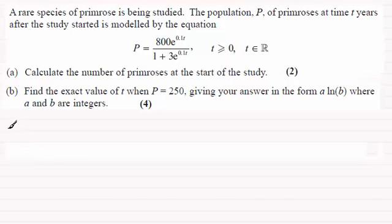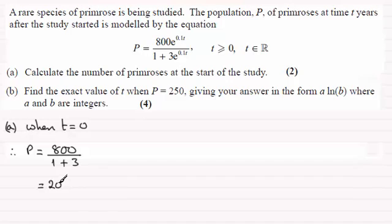So for part a, when t equals zero, we've got P is going to equal 800, and then e to the power zero is going to be 1, so we've just got 800. And in the denominator we're just going to have 1 plus 3. So 800 divided by 4 gives us 200. Okay, so nice and easy one.